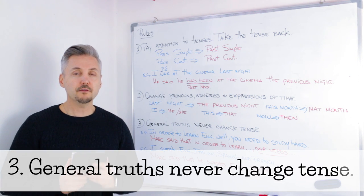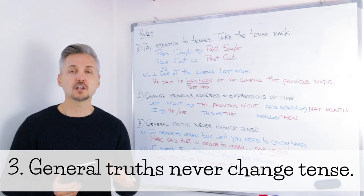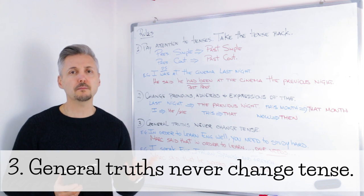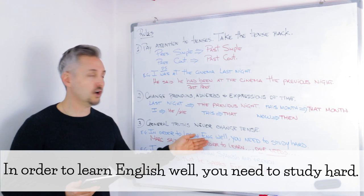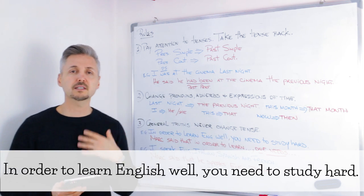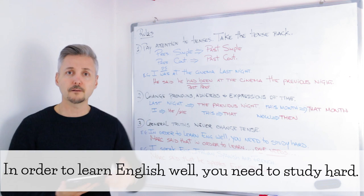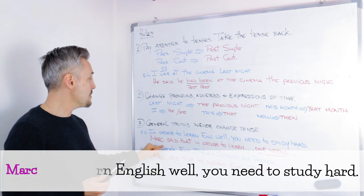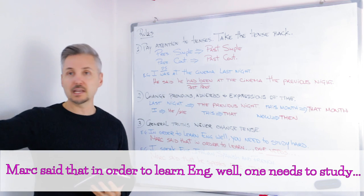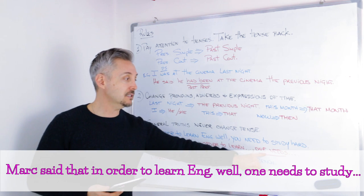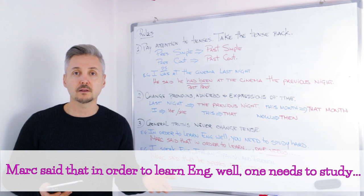Now let's look at the third rule: if we're talking about general truths, they never change tense — we leave the tense as it is, usually the present simple. Just like my introductory example: in order to learn English well, you need to study hard. You can report this to your friend and say: Mark said that in order to learn English well, one needs to study hard. This is always true — it never changes. It's a general truth.